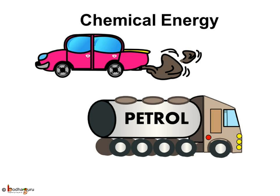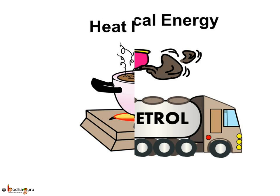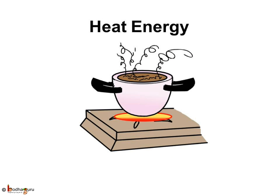You all know about petrol, diesel, and kerosene. Petrol and diesel are used to run vehicles and fly airplanes, and they give chemical energy. How does food get cooked at home? We use heat energy to cook food and to boil water. The burning of fuels like coal, wood, and cooking gas gives heat energy. The natural gas used as cooking gas is called LPG — liquid petroleum gas — which also gives heat energy.